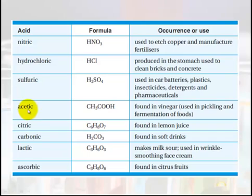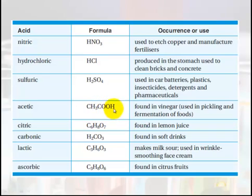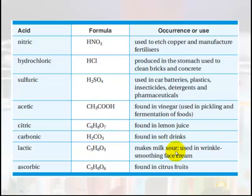Acetic acid, also known as ethanoic acid, has the formula CH3COOH — with two carbons. It's found in vinegar and is used in pickling and the fermentation of foods.